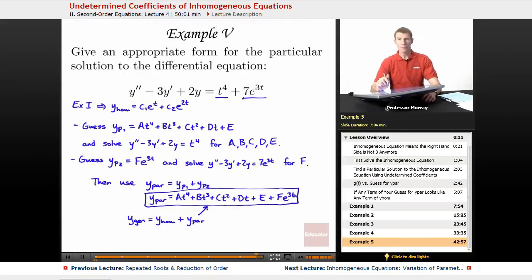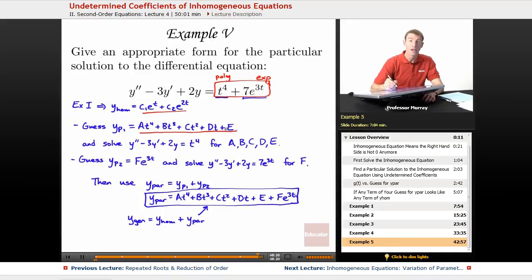So, the key idea of this example, just to recap here, is that when you have a combination right-hand side like this, what you want to do is split it up into the two different types of functions. So, we have a polynomial part and an exponential part, and sort of solve for particular solutions separately. This is all, of course, after finding the homogeneous solution.